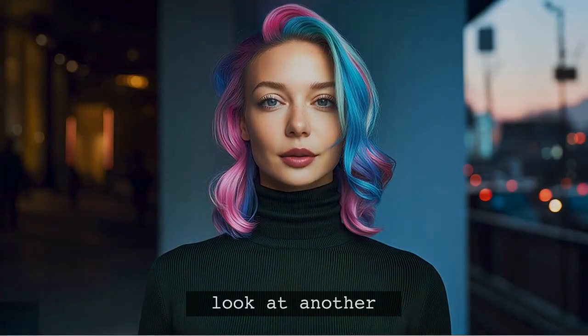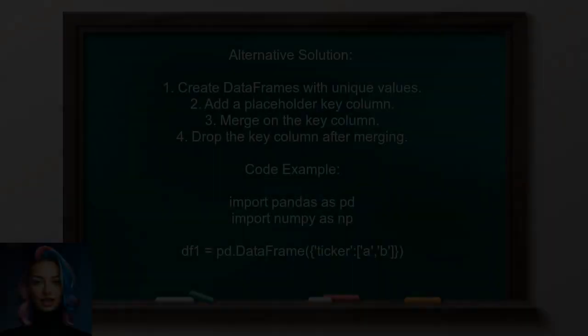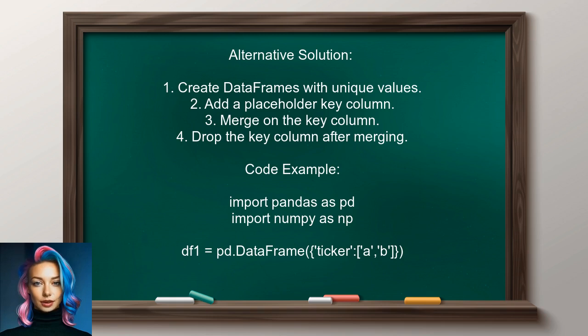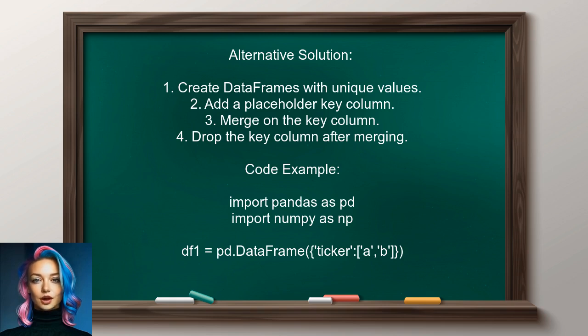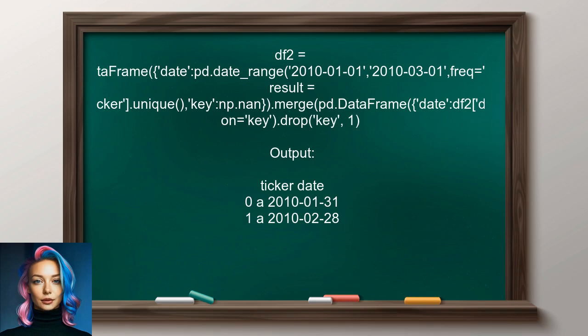Let's take a look at another approach. An alternative provided by another user involves creating a unique key for merging. They suggest using a data frame with unique values and a placeholder key, then merging on that key. This allows for an outer join without a specific key.